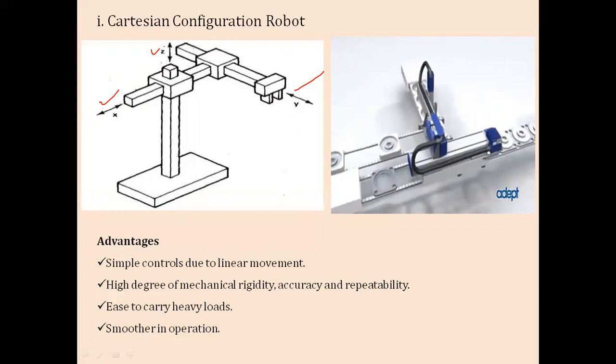When you have a three-dimensional axis system, there will be two orthogonal joints. As we discussed, if you have three sliding axes — X, Y, and Z — they form orthogonal joints in this configuration. Since there is linear motion along the three axes, the robot can start and stop very easily. The motion takes place purely in the form of sliding.